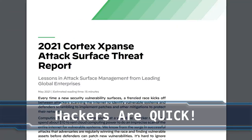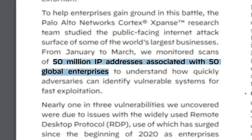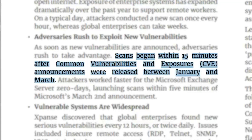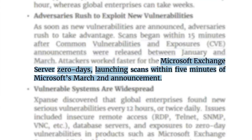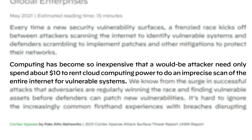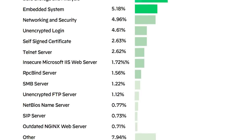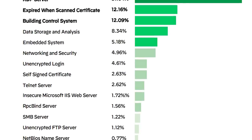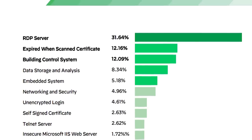A new report from Palo Alto Networks details just how determined bad actors can be at attacking vulnerable systems. The research team monitored scans of 50 million IP addresses associated with 50 large businesses. They found that adversaries were scanning for vulnerabilities just 15 minutes after those vulnerabilities had been announced, and in some cases for more lucrative exploits, hackers were on the case in just 5 minutes. These days computing power is so inexpensive that an attacker would only need to spend $10 to rent computing power to do an imprecise scan of the entire internet. Remote desktop servers were most targeted, as remote desktop provides direct access to systems, often with admin-level privileges. Luckily, these vulnerabilities are often quite easy to patch — a software update usually does the trick.